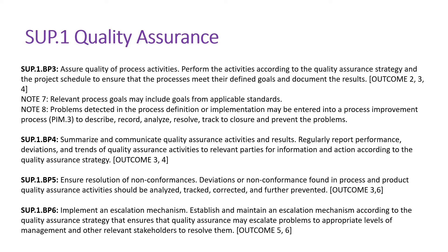BP3 talks about ensuring quality of process activities — perform the activities according to the quality assurance strategy and the project schedule to ensure the processes meet their defined goals, and document the results. Once we have executed and recorded results, we have to describe, record, analyze, resolve, track to closure, and prevent the problems.